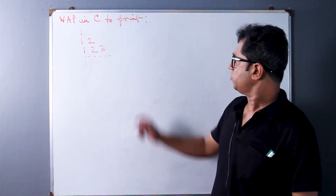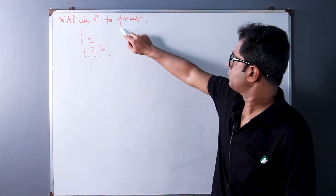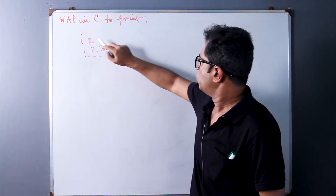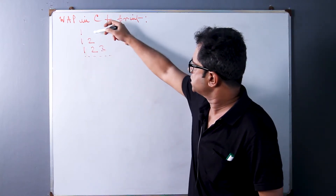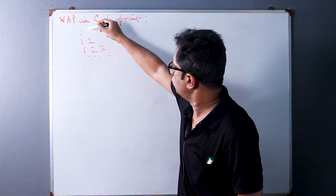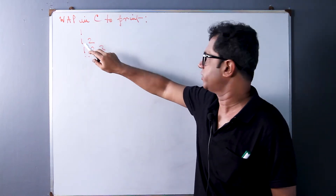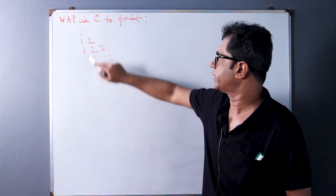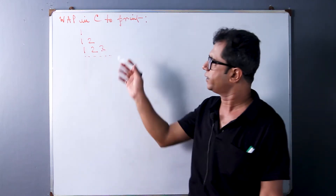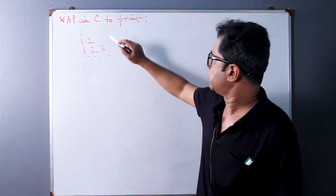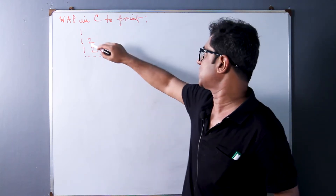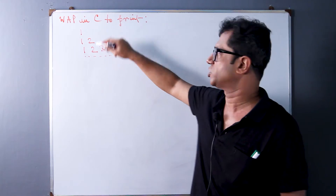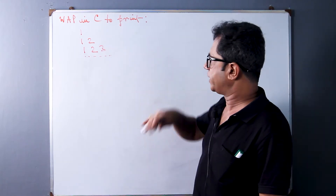We are going to explain a pattern printing program. In the first row, 1 will be printed; in the second row, 1 and 2; in the third row, 1 2 3; in the fourth row, 1 2 3 4, and so on. The user specifies the number of rows and we are going to print the pattern accordingly.